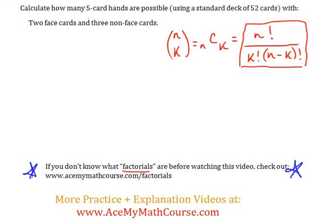Alright, here we have another combination problem. Today it's not raining here in the Pacific Northwest, so I'm very excited, as you can probably tell by my voice. So, without further ado: calculate how many five-card hands are possible with two face cards and three non-face cards.